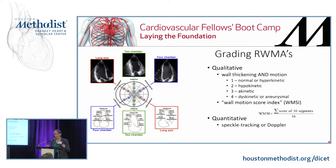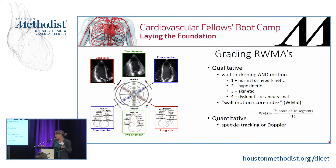If you want to be more mathematical, you can calculate a wall motion score index. You sum the quality of wall motion — both wall thickening and motion — with normal or hyperkinetic being one, all the way to dyskinesis being four. You then divide by the number of segments assessed, so a smaller number is more in line with normal wall motion. Quantitatively, echo can use speckle tracking or Doppler to be more precise about hypokinesis, akinesis, and dyskinesis.